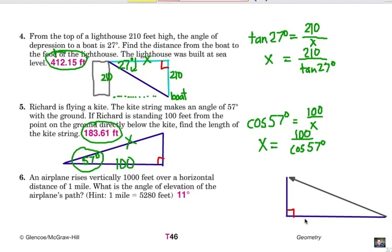An airplane rises vertically 1,000 feet over a horizontal distance of one mile. If my plane is over here on the right and it diagonally gets up into the air but at the end here, it's 1,000 feet in elevation and it's one mile away from where it started, so that's 5,280 feet. We want to know the angle of elevation of the plane's path. That's this angle right here. We're going to go ahead and call that x.